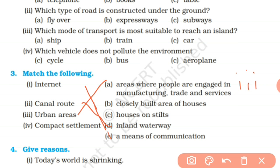Fourth match: Compact settlement - closely built areas of houses, where houses are built side by side, close together. In our settlement topic we studied the types of settlement and covered this portion.